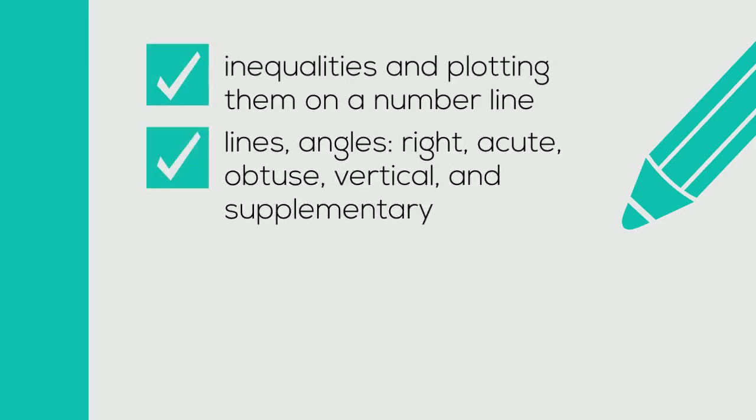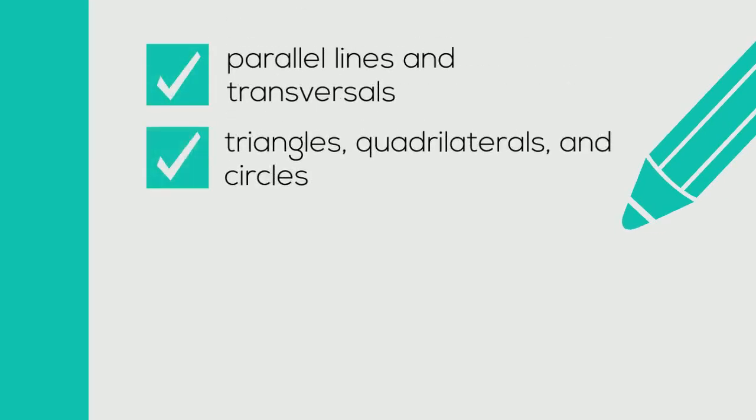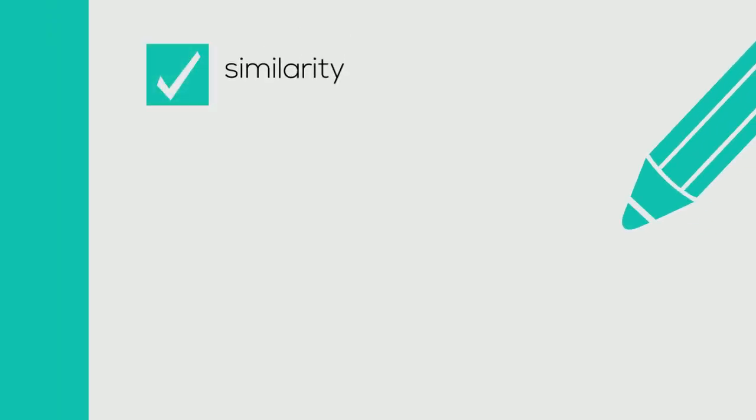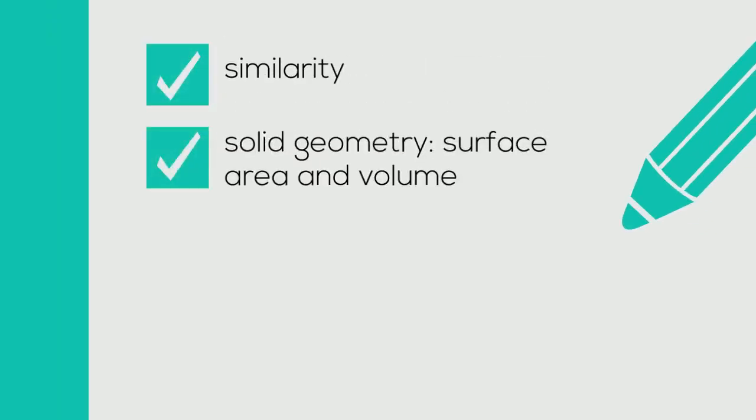Lines, angles: right, acute, obtuse, vertical and supplementary, parallel lines and transversals, triangles, quadrilaterals, and circles, area and perimeter, similarity, and solid geometry: surface area and volume.